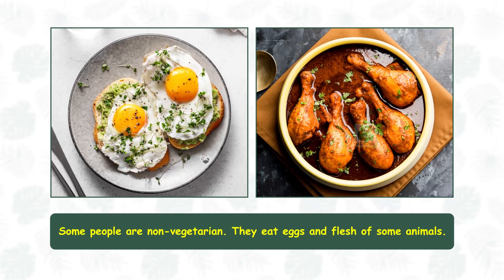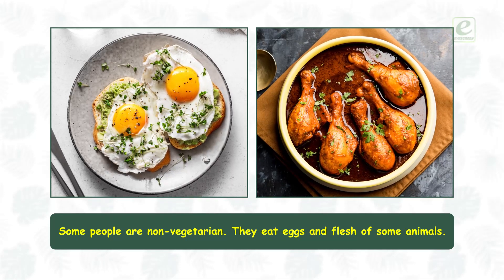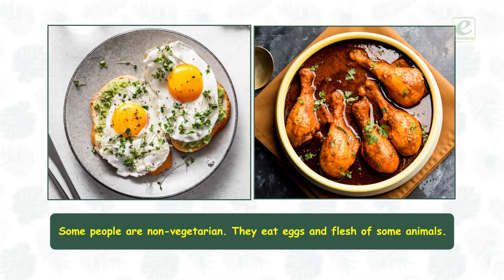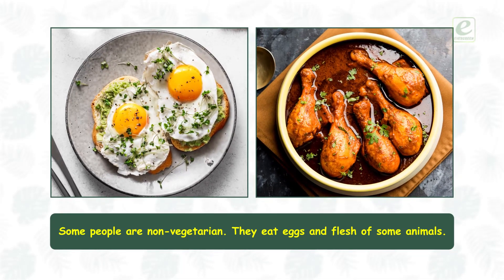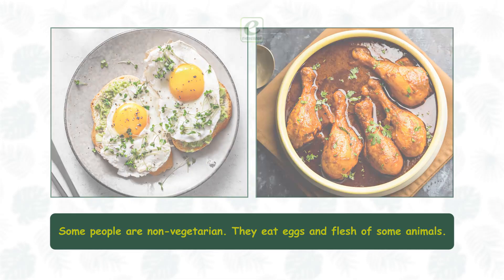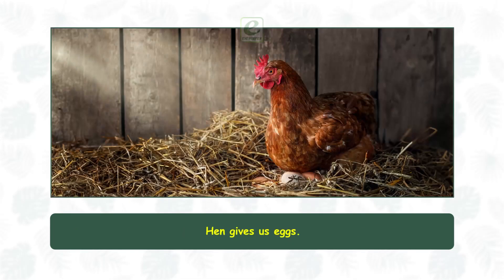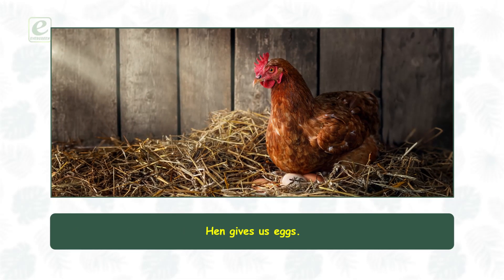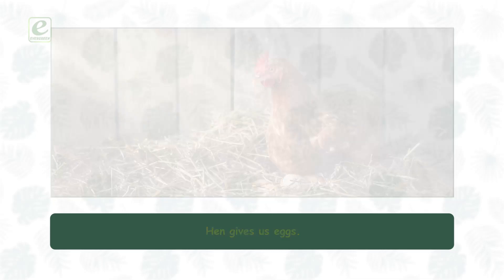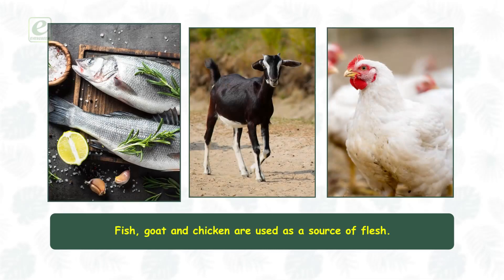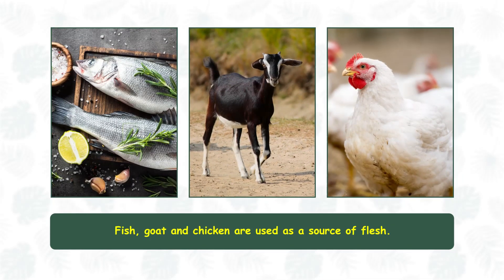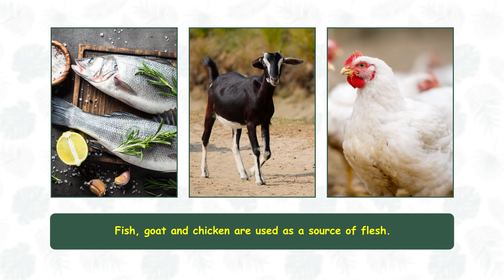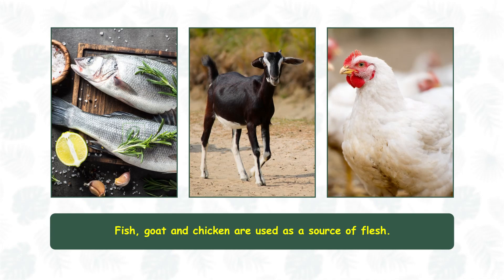Some people are non-vegetarian. They eat eggs and the flesh of some animals. Hen gives us eggs. Fish, goat, and chicken are used as a source of flesh.